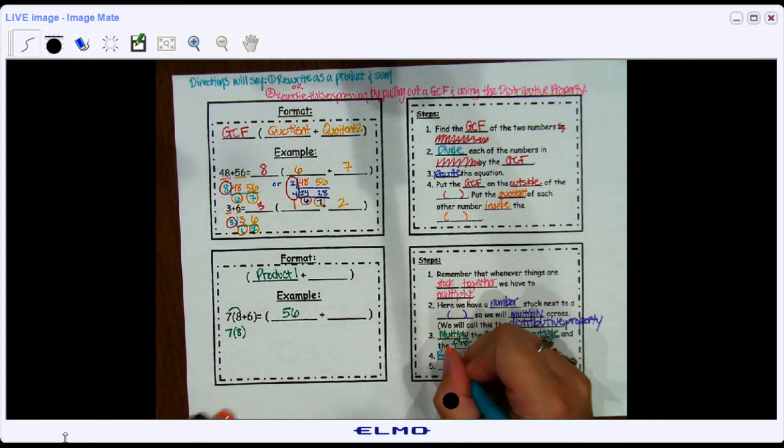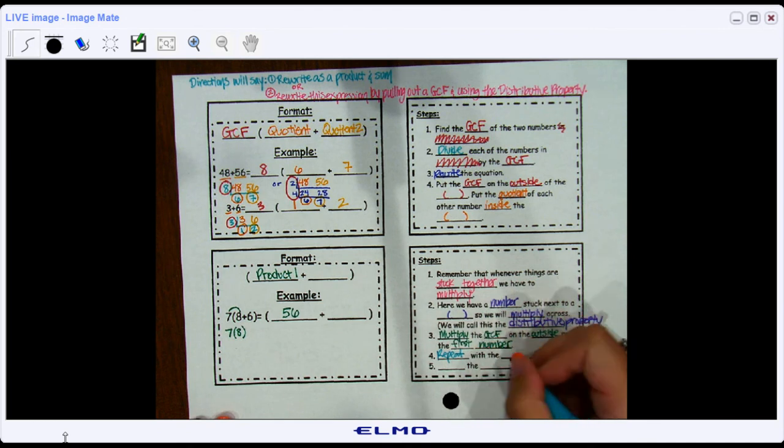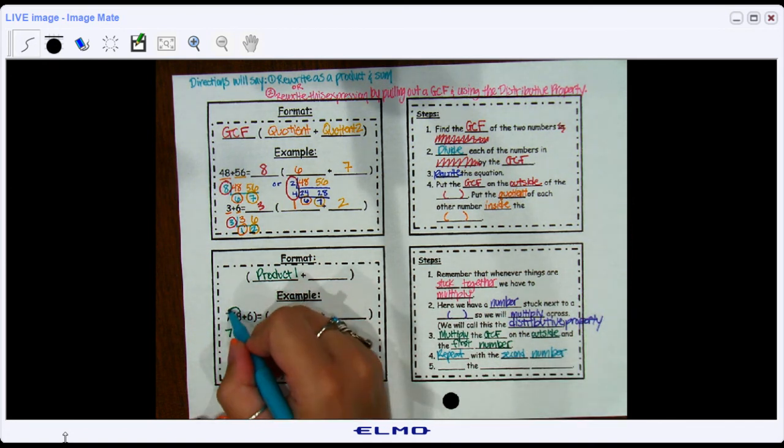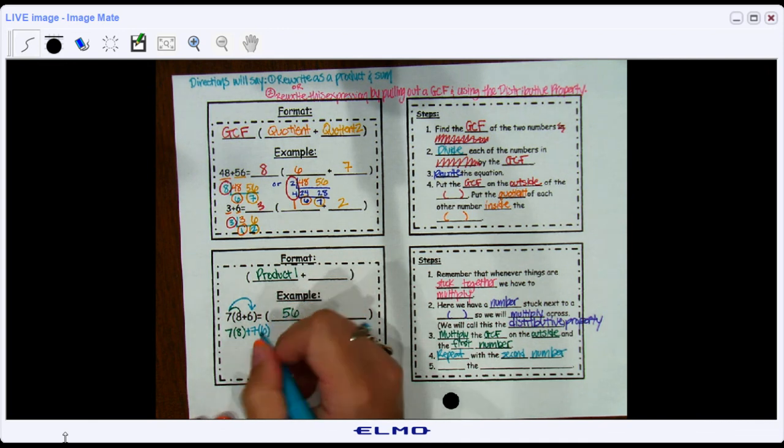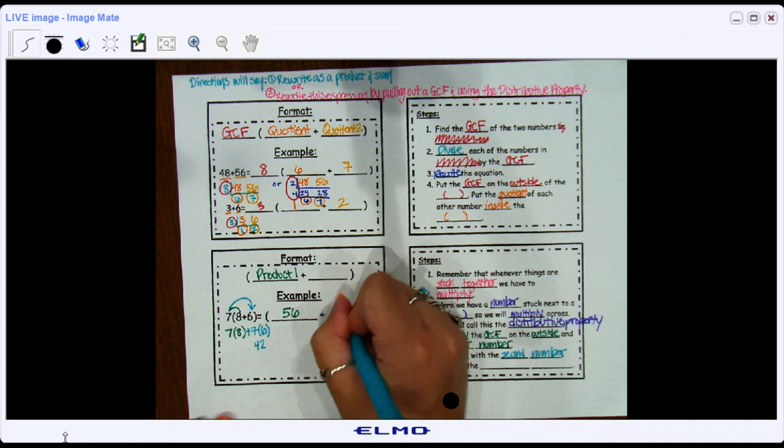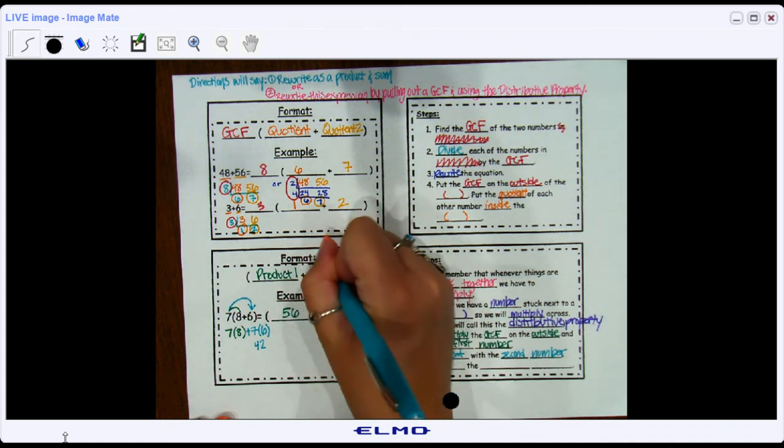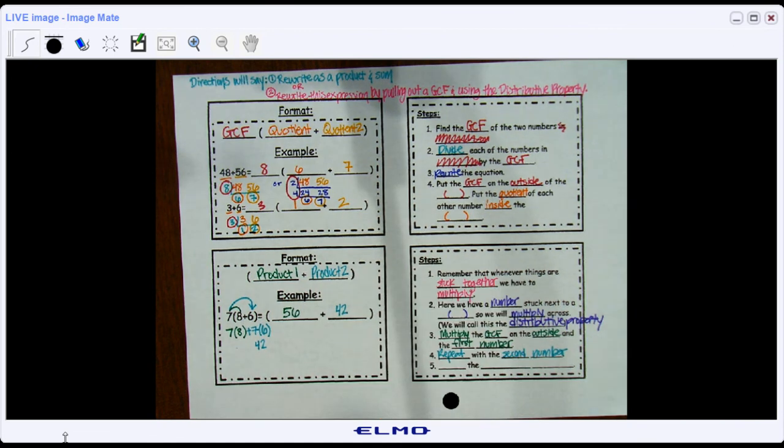Then I repeat with the second number. So I'm going to, again, multiply that GCF out in front with this time the second number. So bring down your plus sign, and you have 7 times 6 this time. Well, 7 times 6 is 42. So this time I'm going to put a 42 here. And that's representing product number 2, because remember, when we multiply two things, that's called a product.